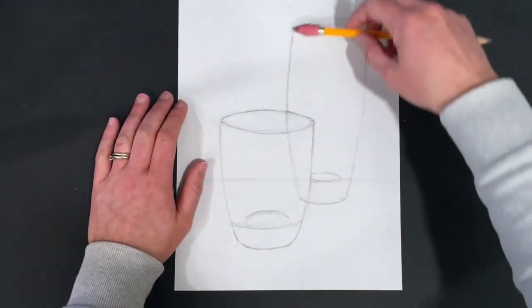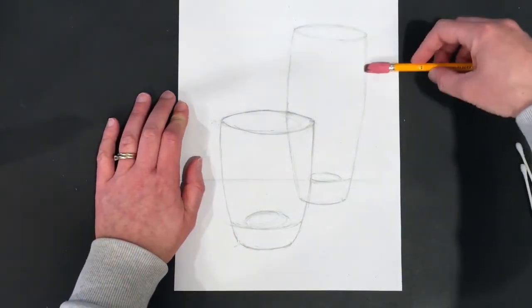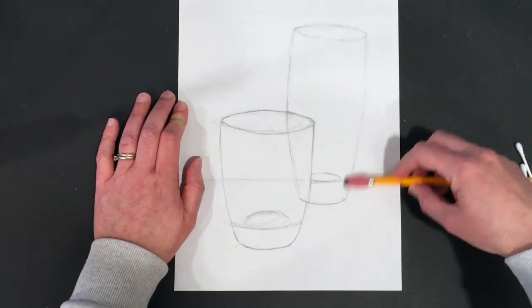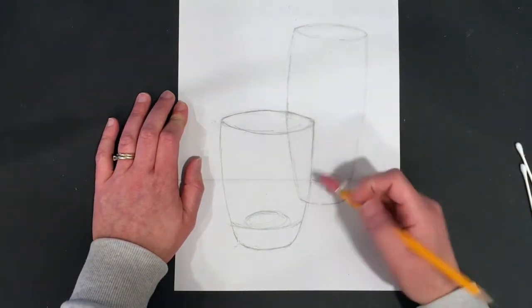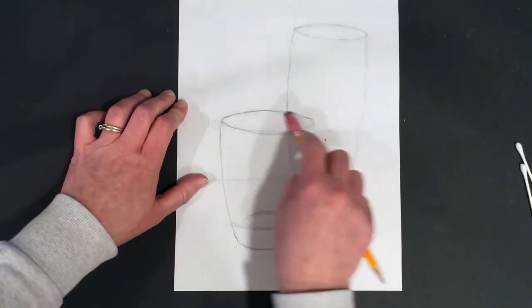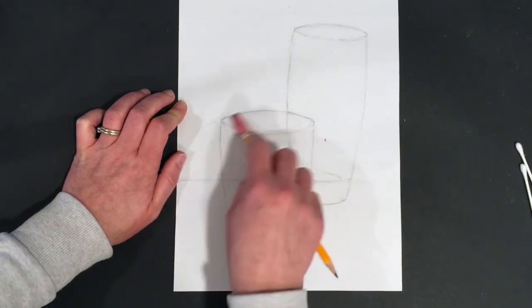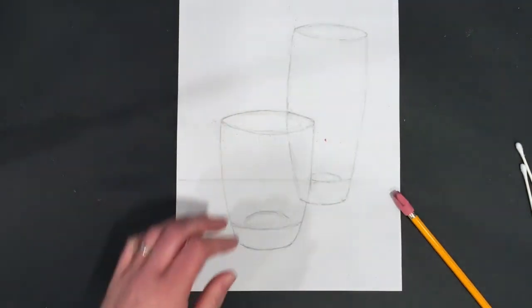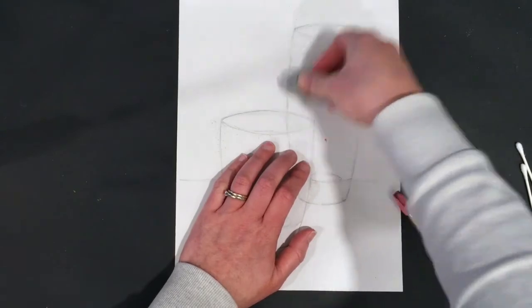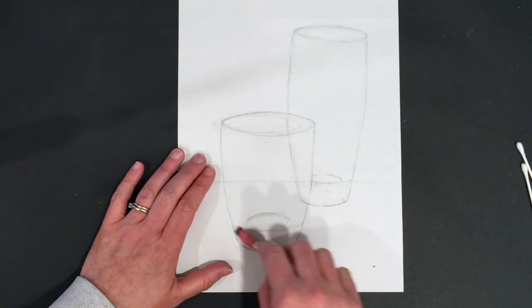Now I'm just going to lighten my contour outlines a little bit. And the way I'm going to do that is I'm going to take my eraser, and I'm going to start by just, I'm running it gently. I'm not pressing hard. I'm barely putting any pressure on the eraser, and I'm just barely, barely, barely lightening my lines. Now usually we'd take a kneaded eraser, right, and do this.